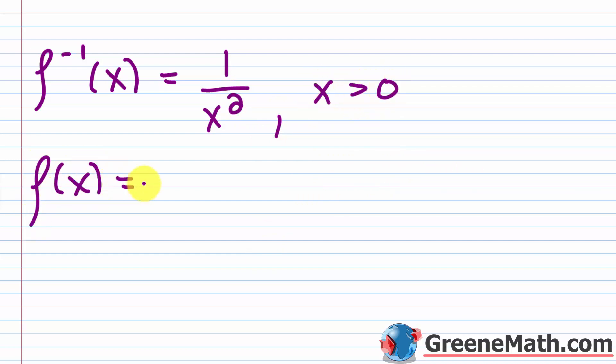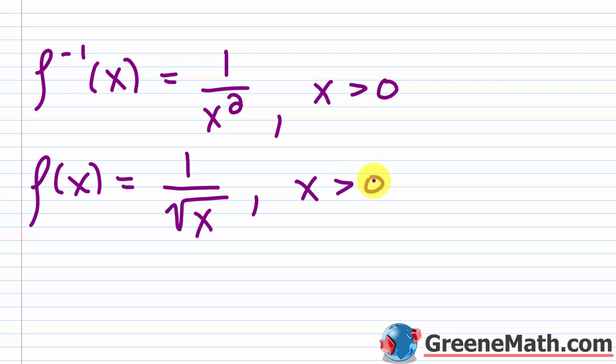So we state the inverse as: f inverse of x equals one over x squared, with the domain restriction x greater than zero. And f of x equals one over the square root of x also has x greater than zero. I'll leave it to you to prove this by checking f of f inverse of x equals x and f inverse of f of x equals x with the domain restriction — because without it, you'll run into the square root of x squared issue equaling the absolute value of x again.